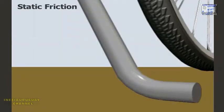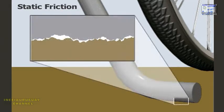When two surfaces are in contact but not in motion, such as a bicycle's kickstand on the ground, they cause static friction. Static friction makes it difficult to begin moving an object. When motionless, the two surfaces can form more and stronger bonds than if they were moving, so static friction is usually harder to overcome than sliding or rolling friction. In this case, it prevents the kickstand from moving, so the kickstand can support the bicycle.